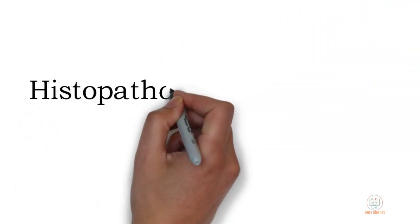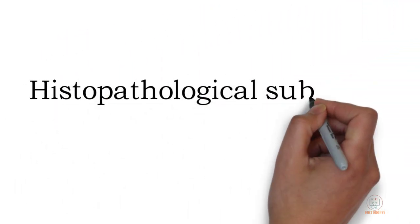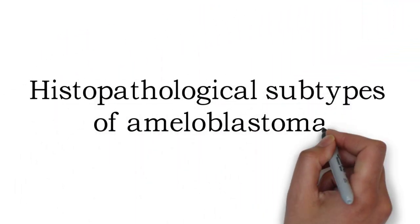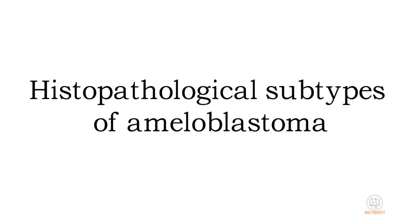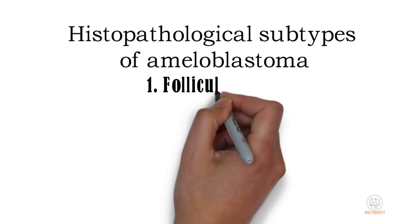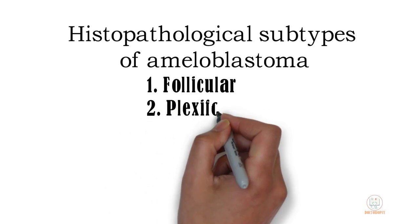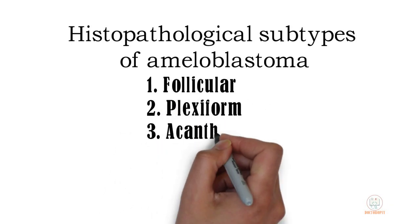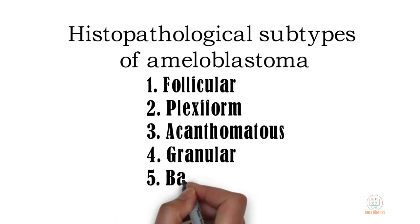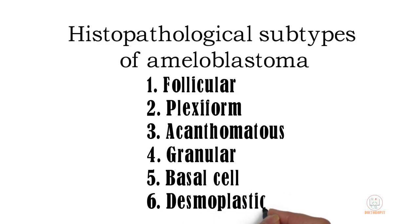Six histopathological subtypes of ameloblastoma are recognized depending on the pattern and features of the neoplastic epithelial component: follicular, plexiform, acanthomatous, granular, basal cell, and desmoplastic.